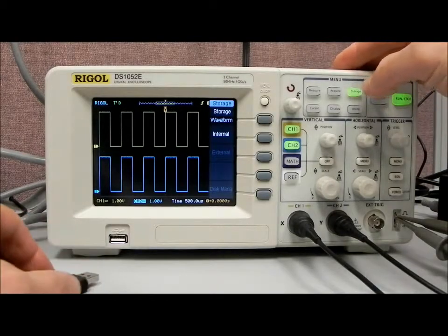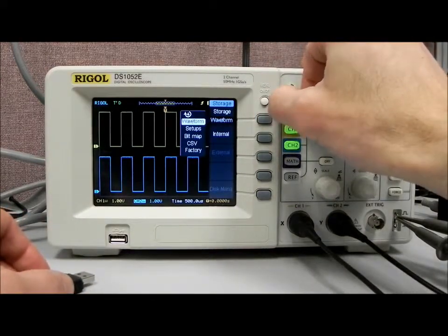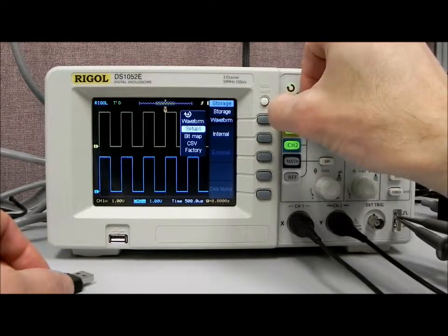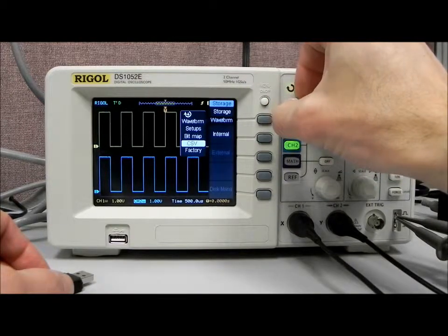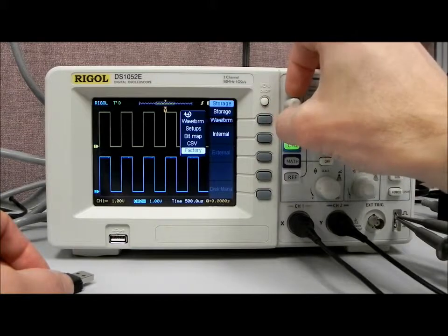I hit the storage key and now I have a storage menu which has waveforms, setups, bitmap, CSV, as well as factory which returns us back to factory defaults.